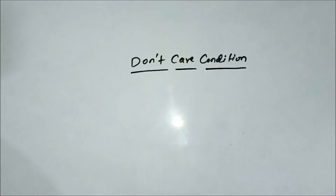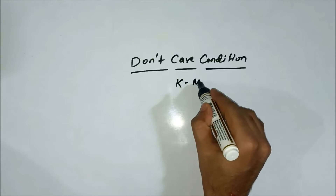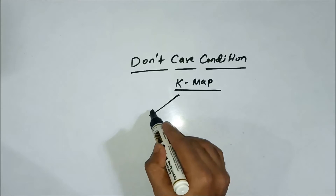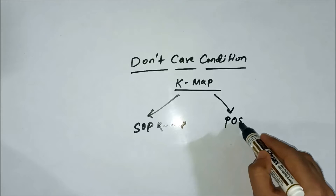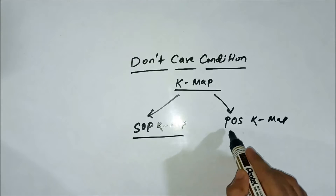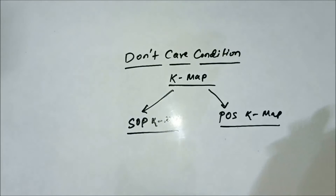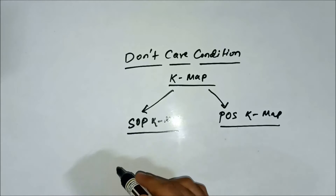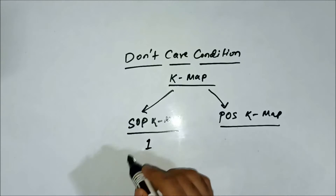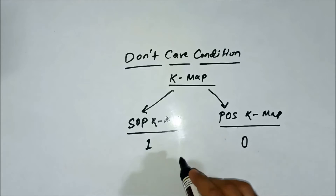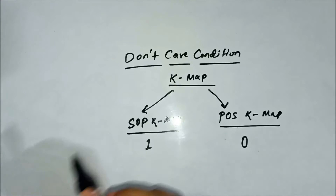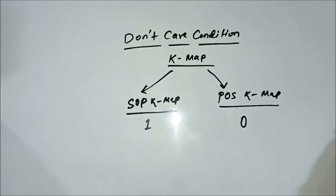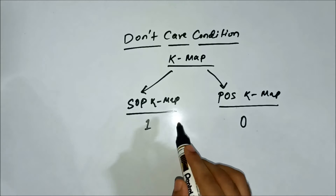So far we have discussed that K-maps are of two types: first, the SOP K-map (sum of products K-map) and the POS K-map. Their structure is different depending on the notations and the ways in which the variables are arranged. In SOP K-map, logic 1 is plotted and marked, and in POS K-map, 0 is plotted for a particular input combination.